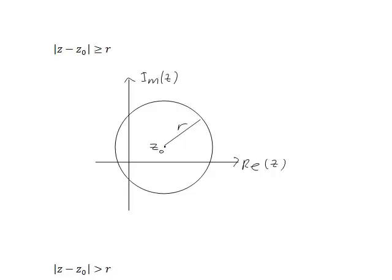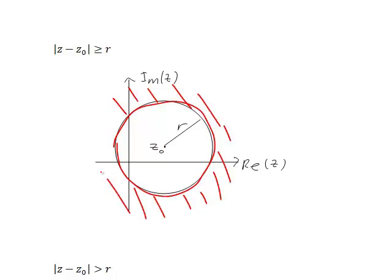We could also have |z - z₀| ≥ r. The 'equal to' means the boundary of the circle is included, and 'greater than' means all the area outside the circle in the complex plane is shaded.